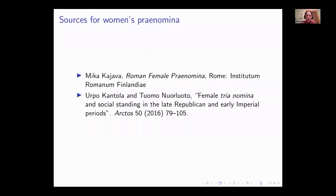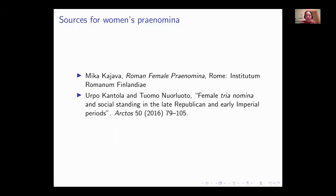If you're wondering where to find these examples, one source is a book by Mika Kajava called 'Roman Female Praenomina.' It's a fascinating book, but really hard to find — I bought a copy from Germany because I knew I'd be teaching this class. There's also an article by a couple of Finnish scholars about female tria nomina, giving more examples of women using praenomina — particularly women in the Eastern Empire or Greek-speaking regions, who may have used tria nomina simply because they were Greek and didn't fully understand how women's names were supposed to work.